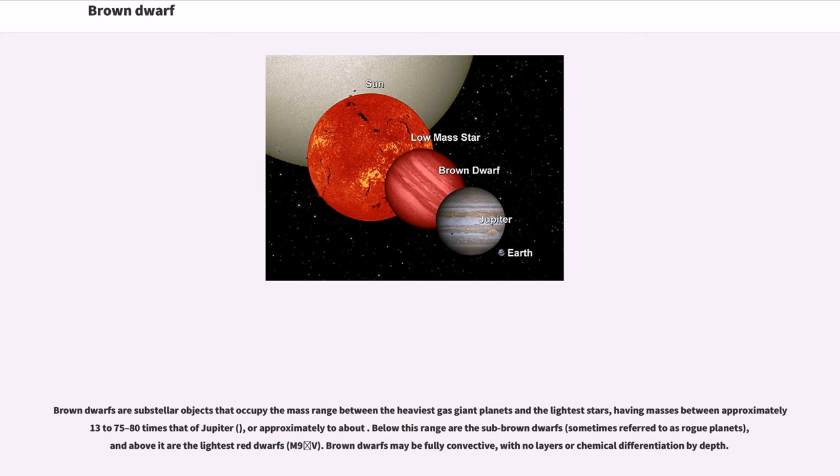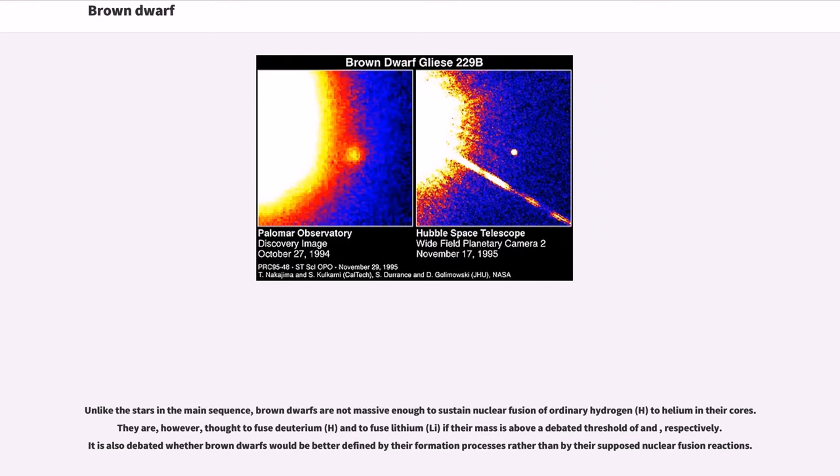Brown dwarfs are substellar objects that occupy the mass range between the heaviest gas giant planets and the lightest stars, having masses between approximately 13 to 75-80 times that of Jupiter. Above them are the lightest red dwarfs. Brown dwarfs may be fully convective with no layers or chemical differentiation by depth.